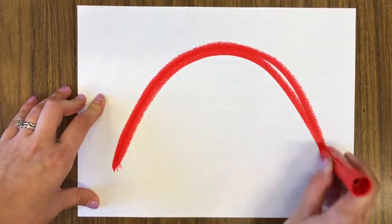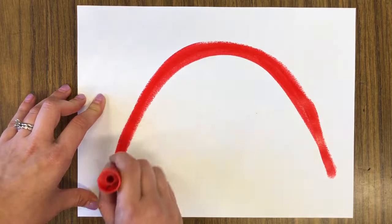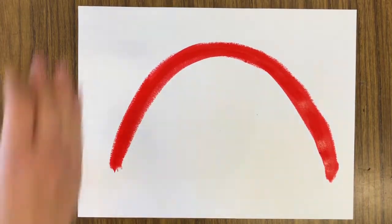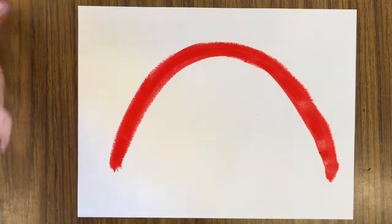Make a big red curve on your paper for the top of the rainbow. Make sure to fill up almost your entire paper. Go over it back and forth a few times to make your rainbow line nice and thick.